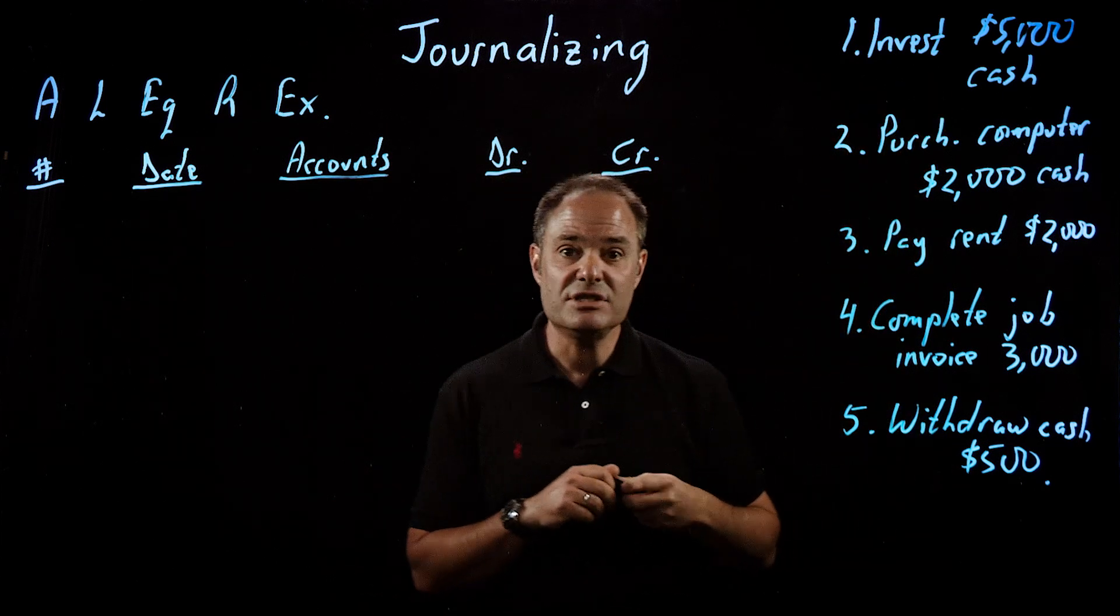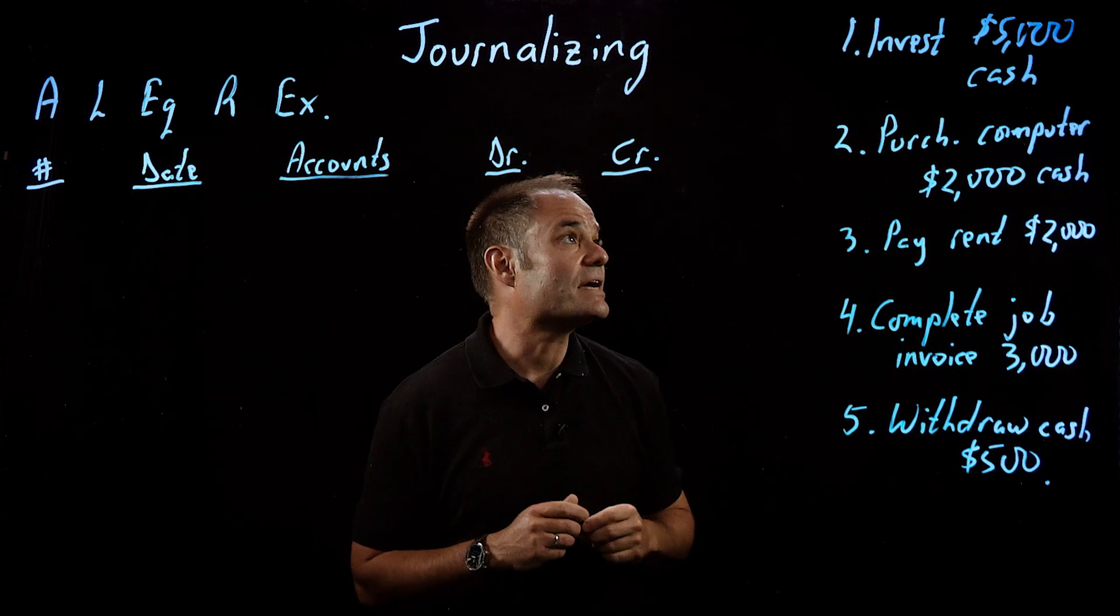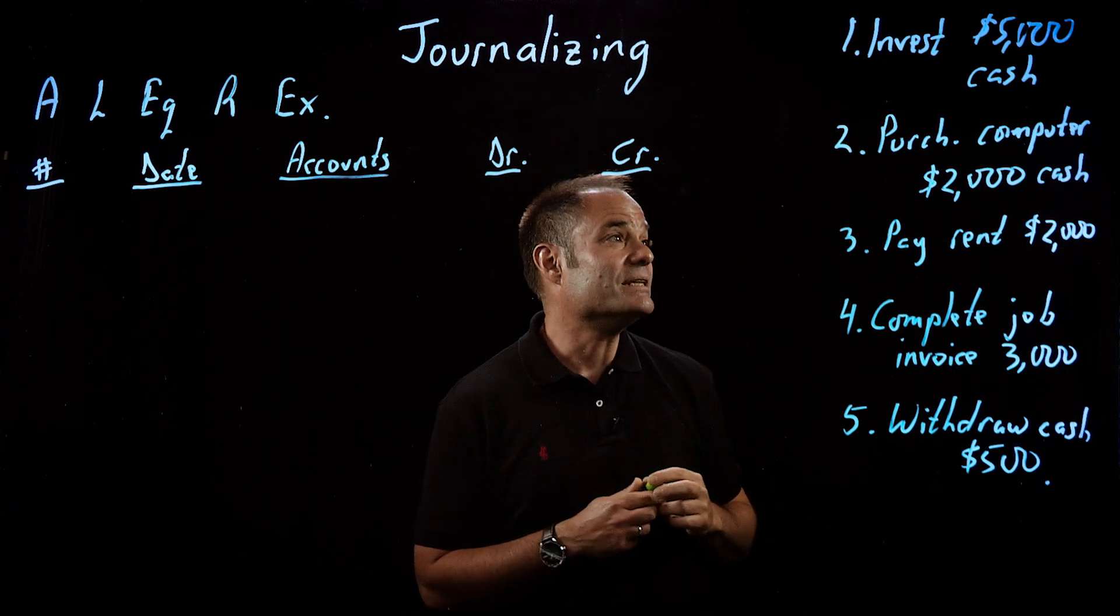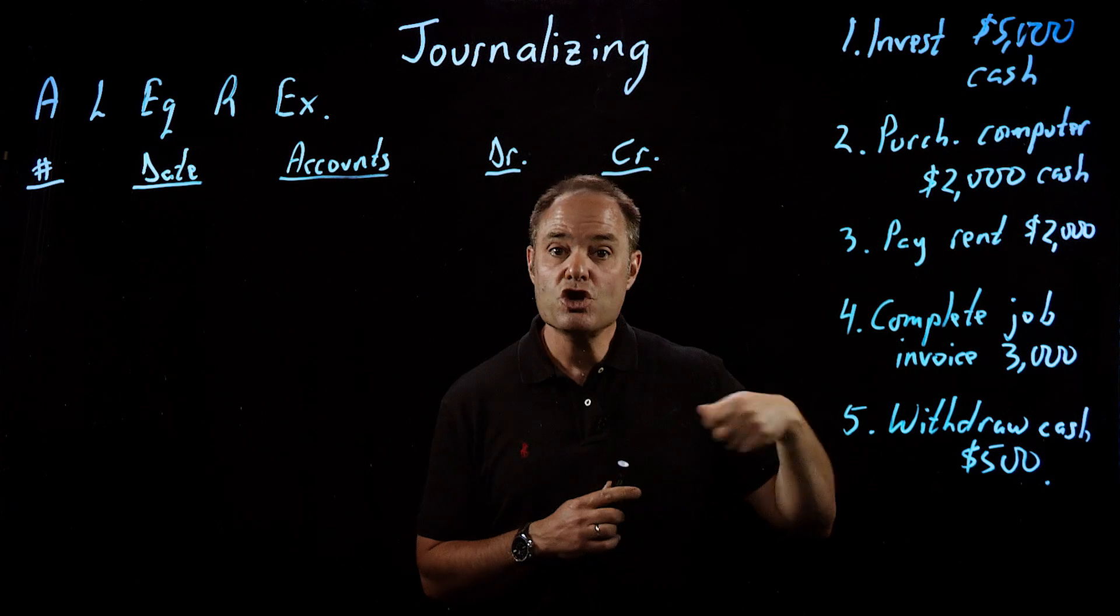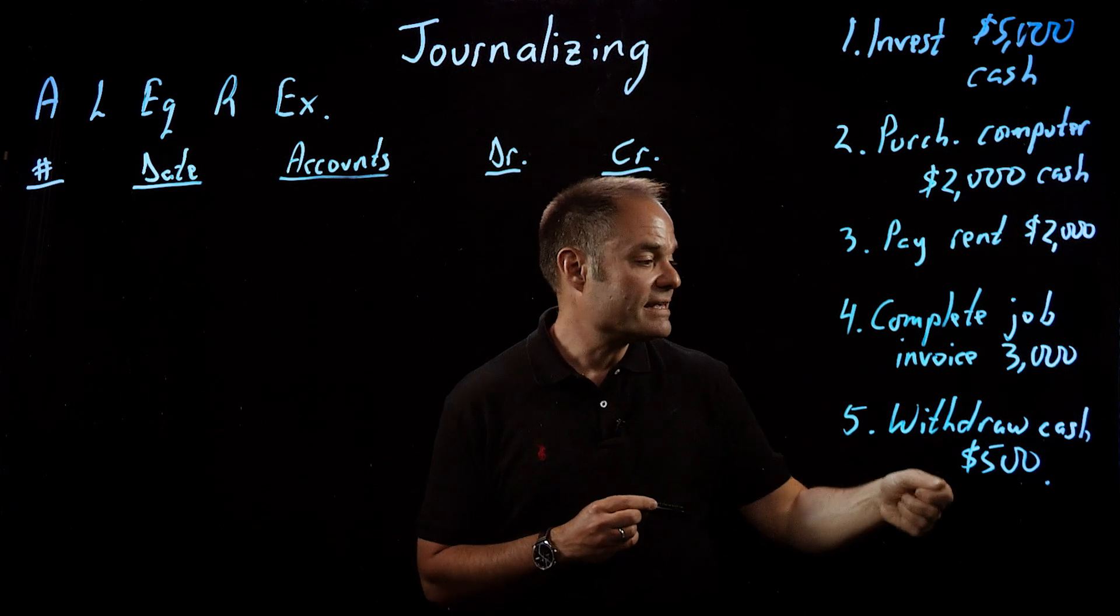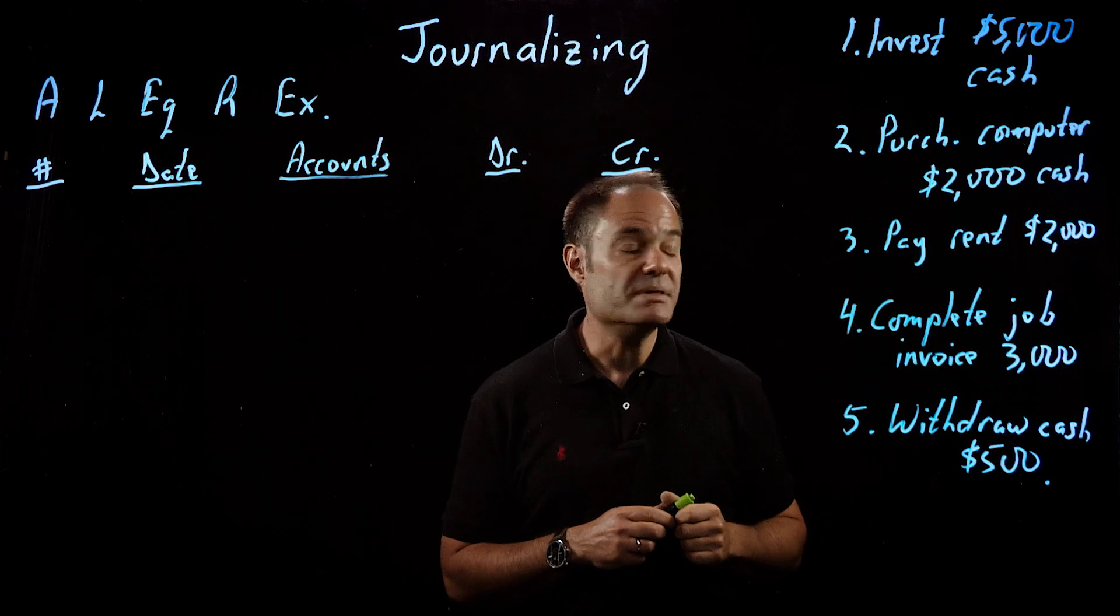Over here, we have five transactions. These are the same five that we looked at before: investing some money in the business, purchasing a computer, paying rent, completing a job and invoicing a client, and then finally withdrawing some cash from the business.